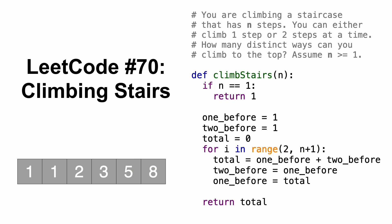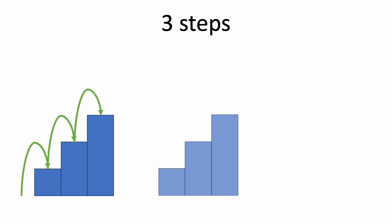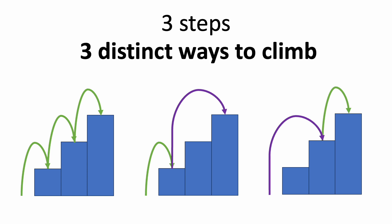For example, if the staircase has three steps, the first way to climb the stairs would be to take one step, one step, and one step. Another way would be to take one step, then take two steps. And the last way would be to take two steps first, then one step. There's a total of three distinct ways to climb the stairs.